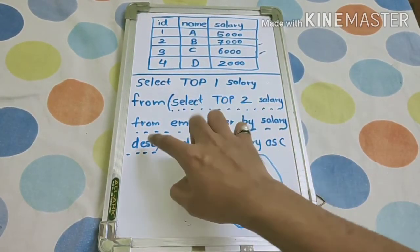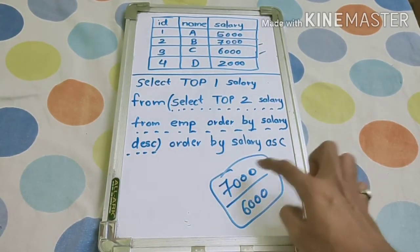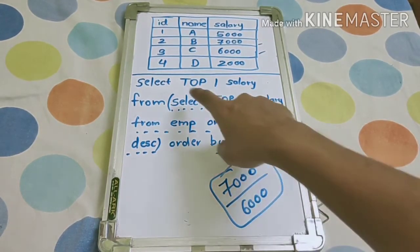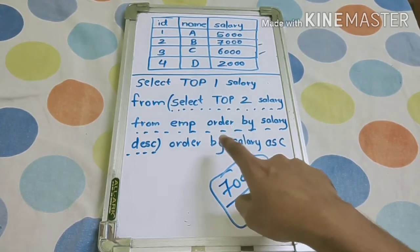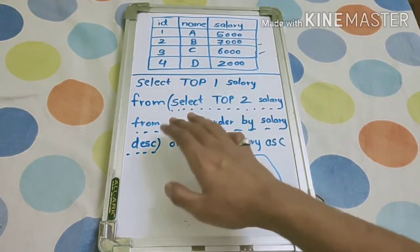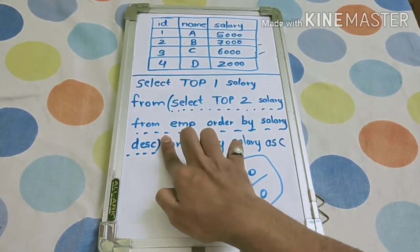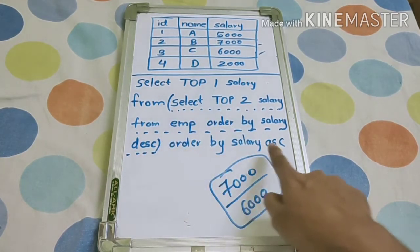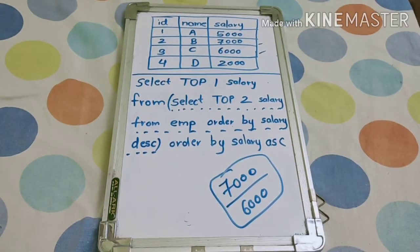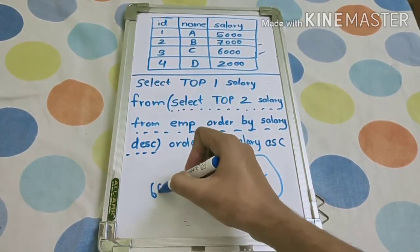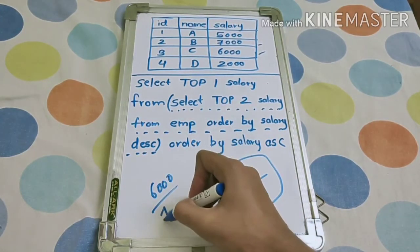This underline output is this one: 7000, 6000. So select top one from this. If we consider up to this only, it will print 7000. But if you order by salary in ascending order, first it will print 6000 and then 7000.